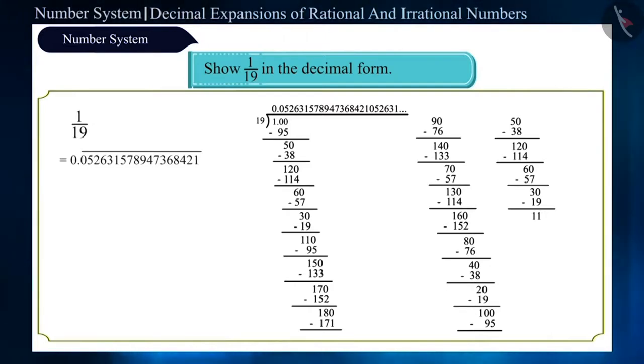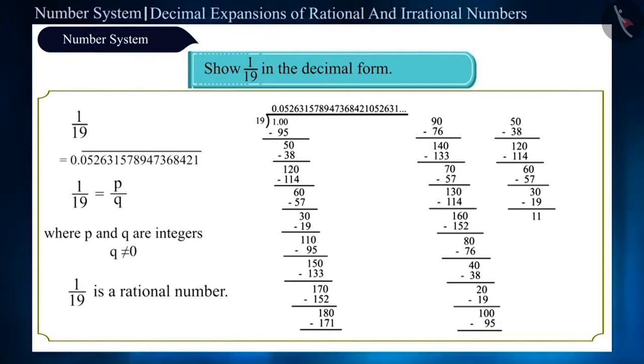We can write this number as 1 by 19, that is p by q. So, it is a rational number. In this, we will definitely get repetition of some number or group of numbers.